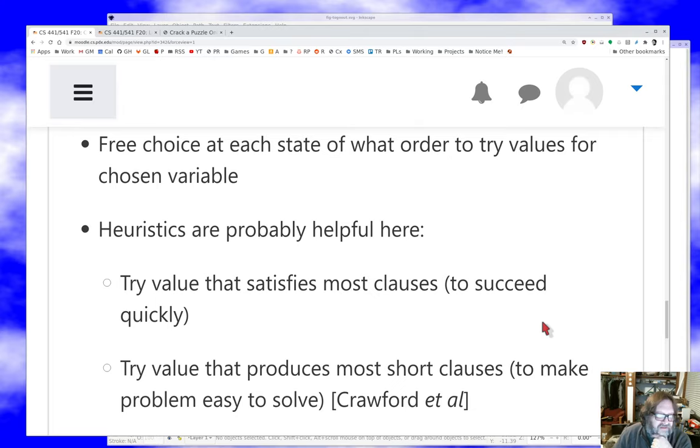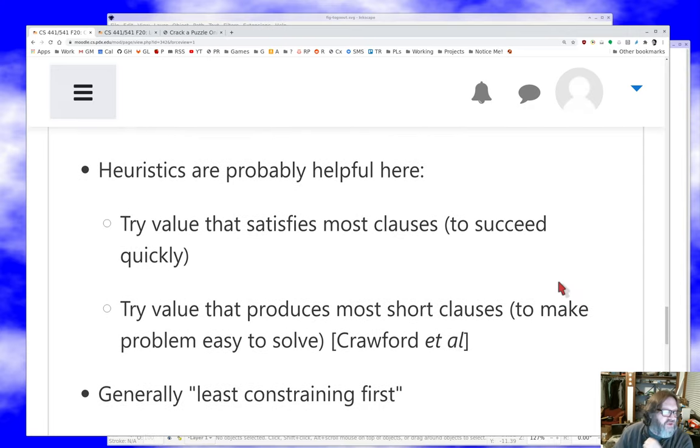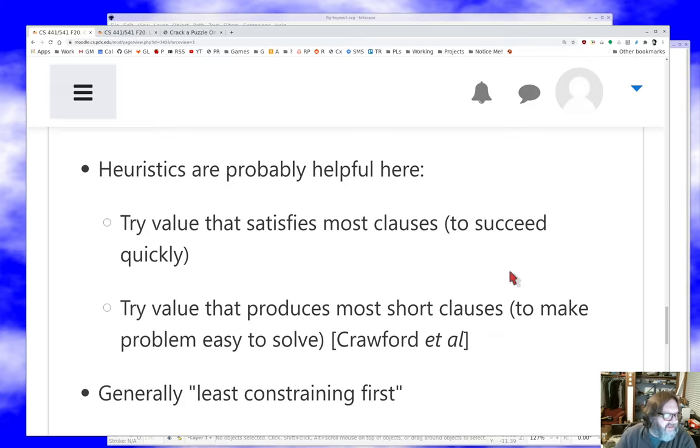And another heuristic that works out well that my former mentor in grad school, Jimmy Crawford, popularized this in a system called Tableau. Try a value that produces the most short clauses. So for 3SAT, if you can get a 3SAT problem through search down to a 2SAT problem, it turns out that 2CNF SAT is linear solvable. And so if I can get rid of all those annoying three clauses, then I can either find an assignment or find that it's unsatisfiable for that branch really, really quickly. And so in general, what we say is choose the least constraining thing first. Choose the thing that leaves you the most freedom when you're solving a CSP to extend the solution. And that's a general heuristic.